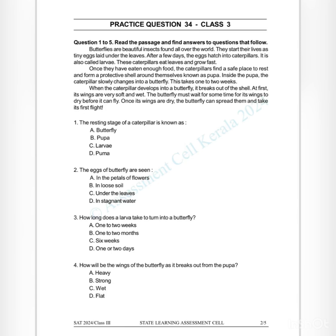Inside the pupa, the caterpillar slowly changes into a butterfly. This takes one to two weeks. When the caterpillar develops into a butterfly, it breaks out of the shell. At first its wings are very soft. The butterfly must wait for its wings to dry before it can fly. Once its wings are dry, the butterfly can spread them and take its first flight. Question 1: The resting stage of a caterpillar is known as...